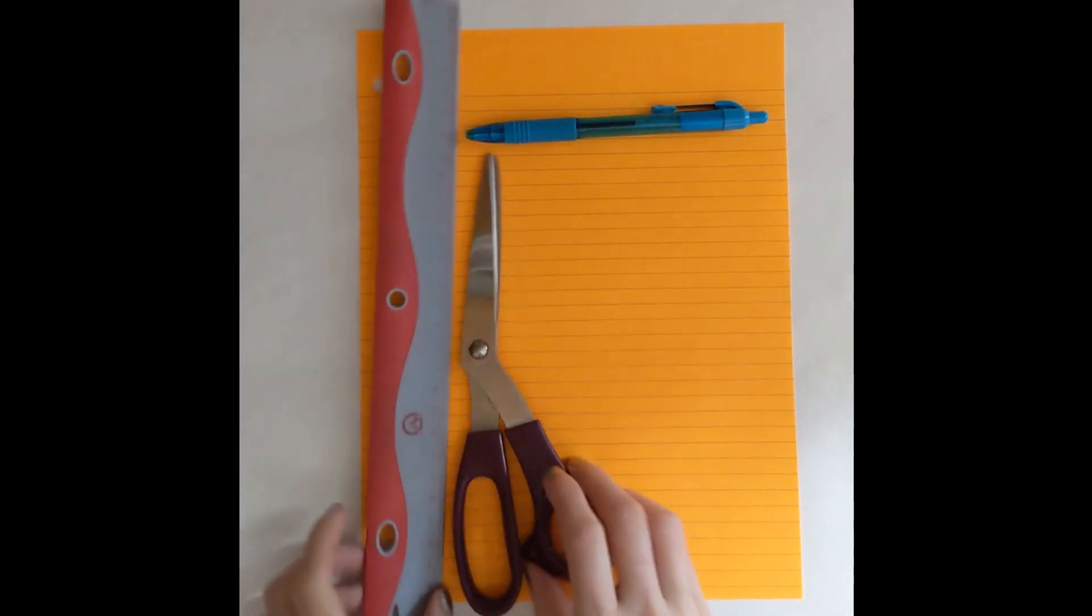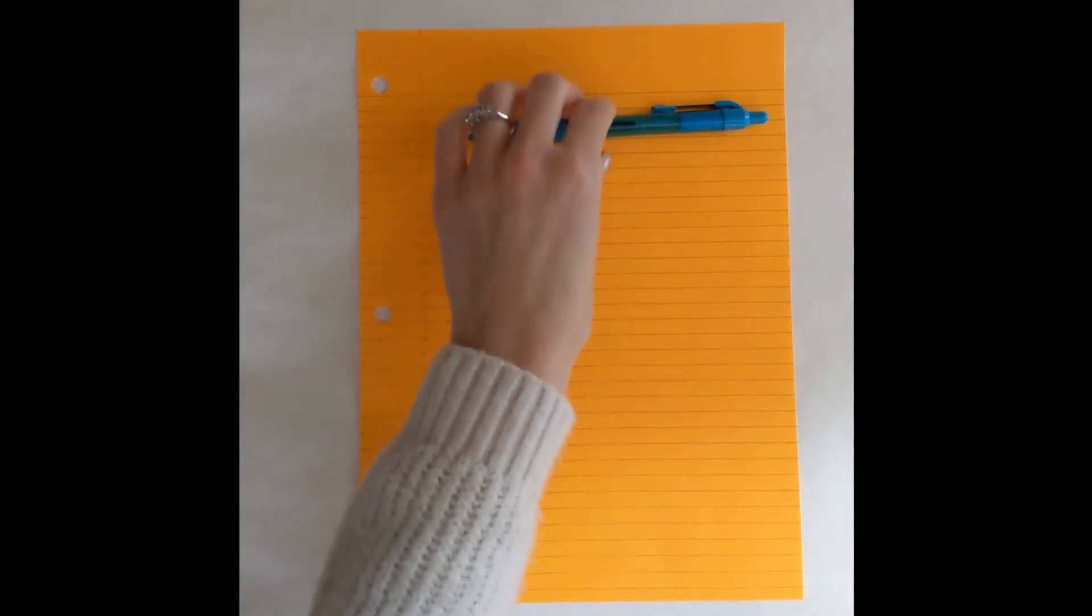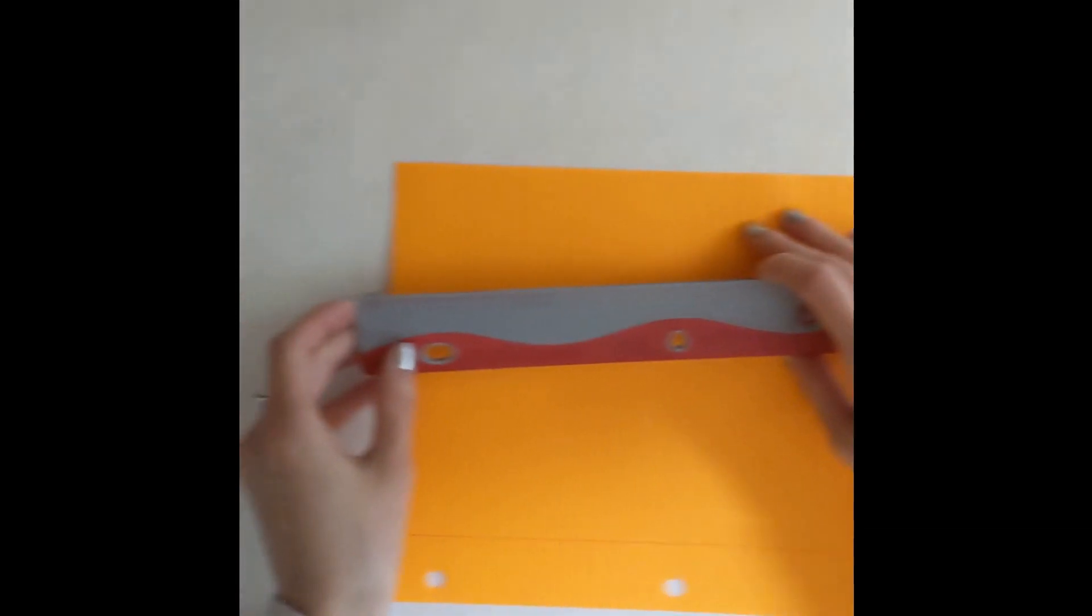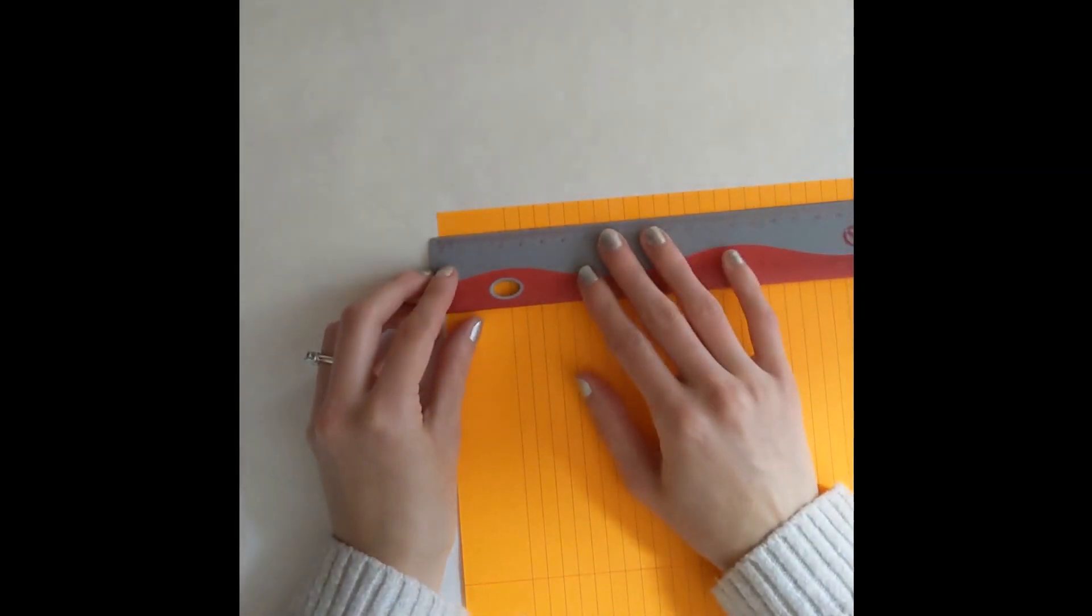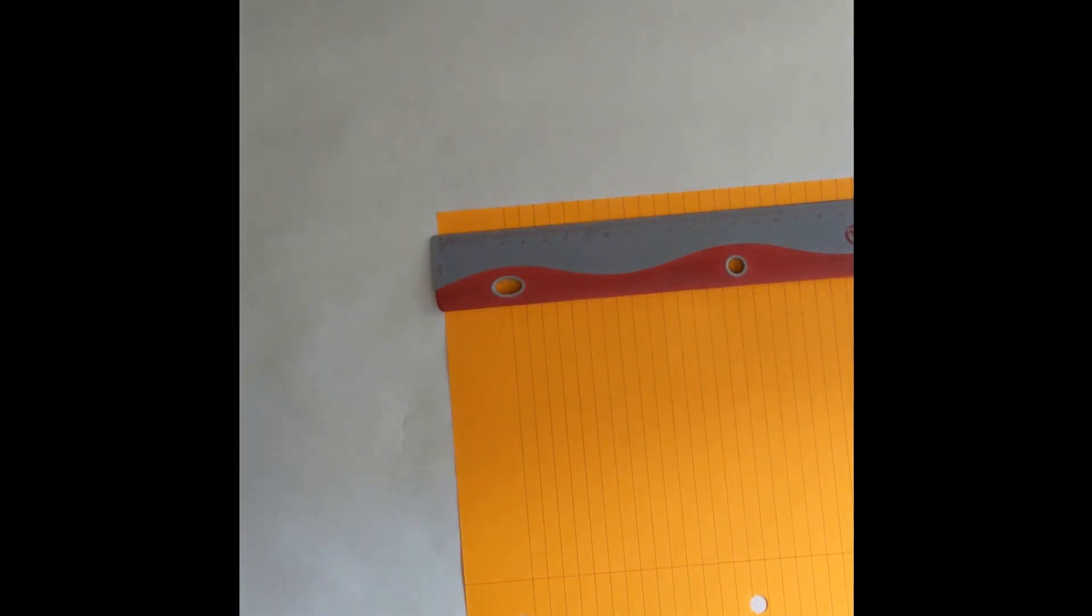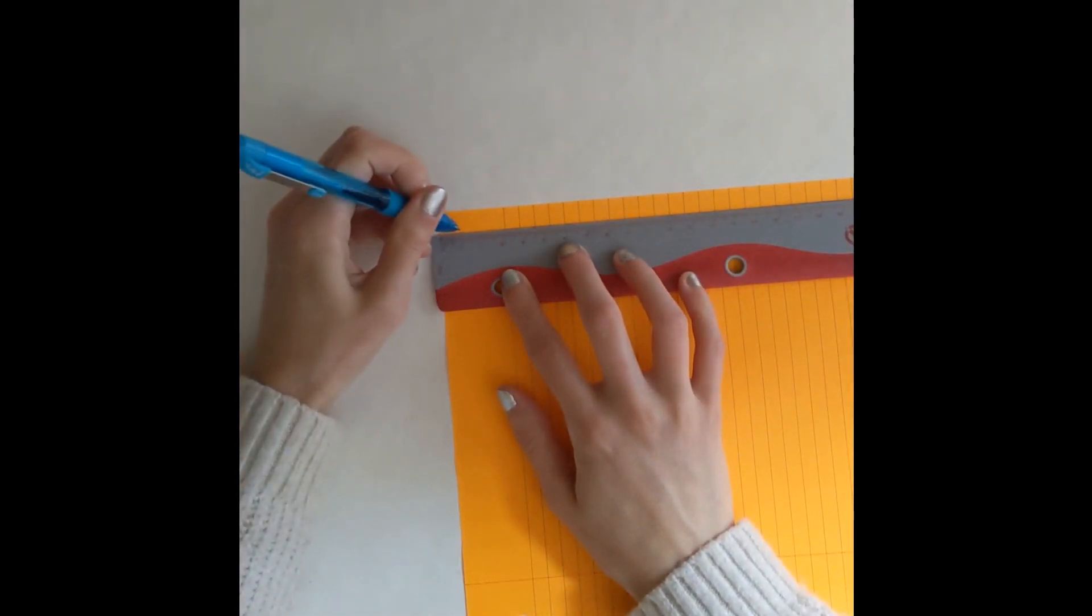So to get started you'll want to find yourself a flat surface to work on. Then we will take our piece of paper and turn it on its side like this. Now take your ruler and measure out one centimeter from the edge of the page. You'll want to do this near the top and near the bottom of the page.